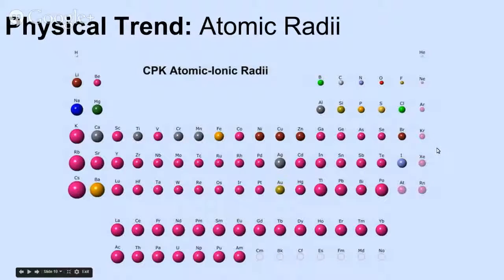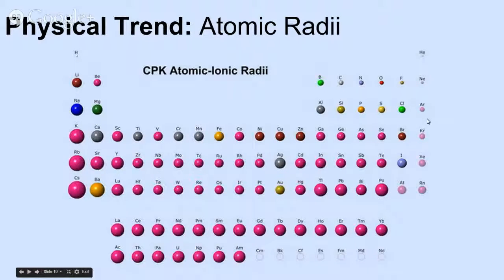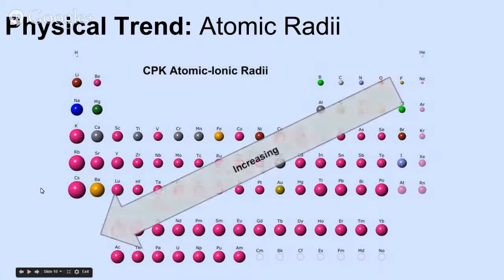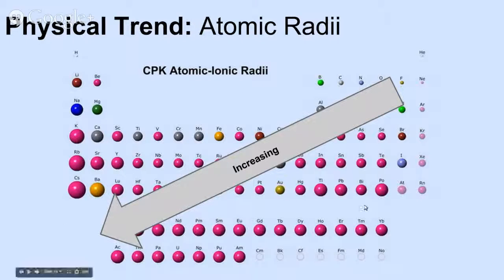The final physical trend is atomic radii. A radii is just like the radius of a circle — it represents the circle's size. The bigger the radii, the bigger the circle. So an atom's radii, or its size, increases going from the upper right-hand corner down to the bottom left. So the trend in atomic radii increases from upper right to bottom left.